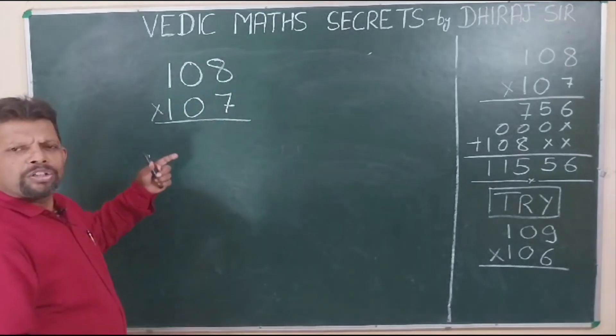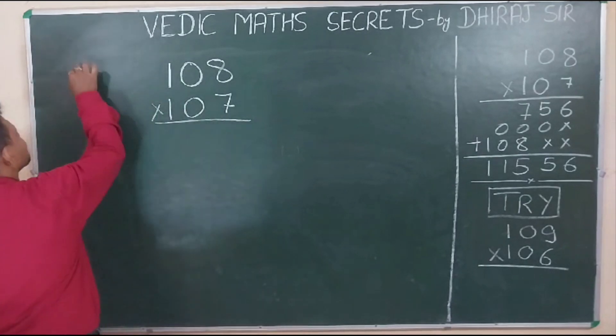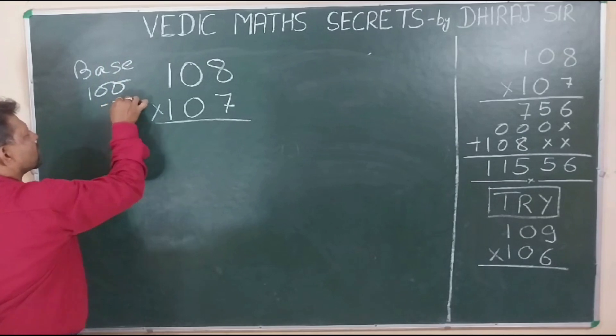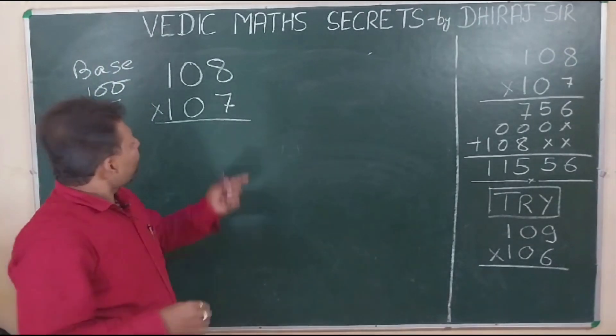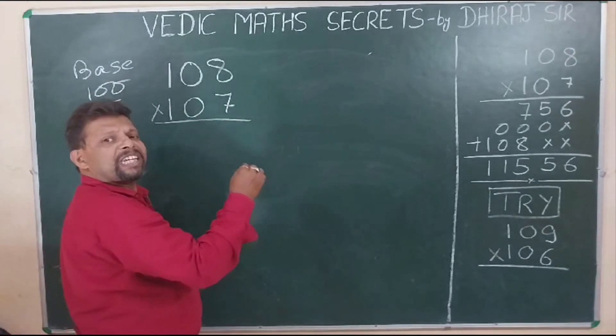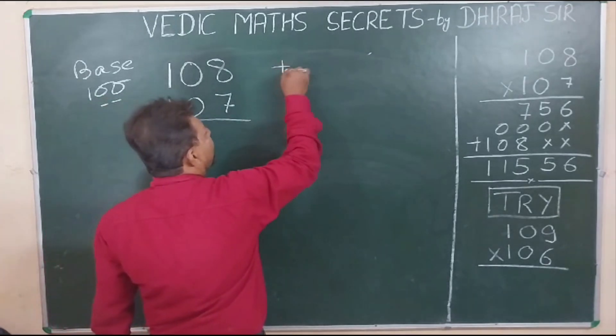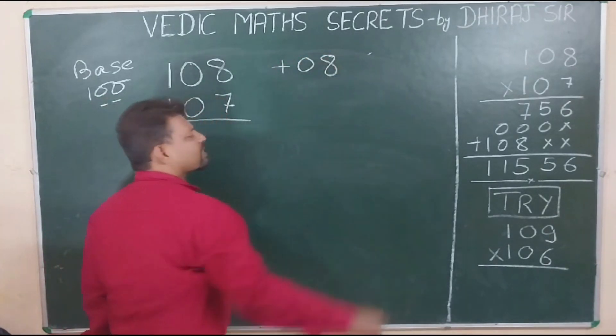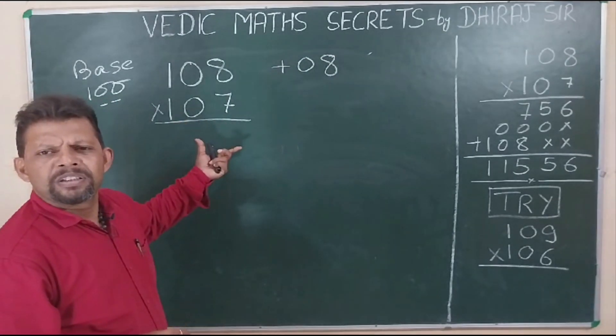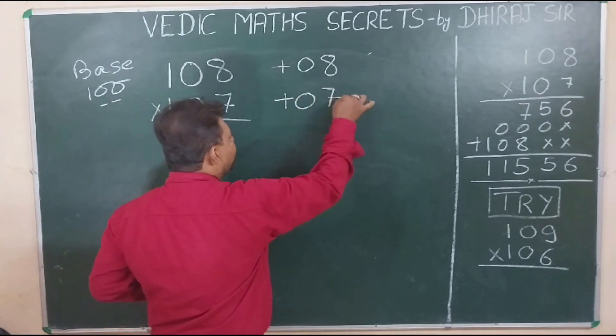Here also these two numbers are very close to the base 100. They are above base 100, isn't it? And this number 108 is how much above the base? You would say it is 8 above the base. That's correct. What about the other number? 107 is 7 above the base.